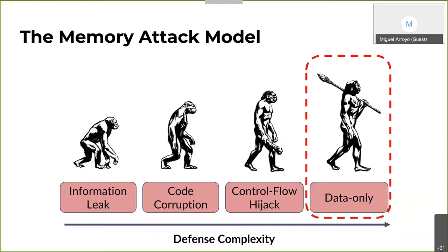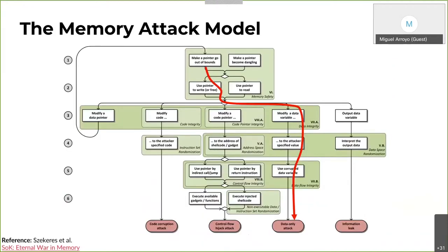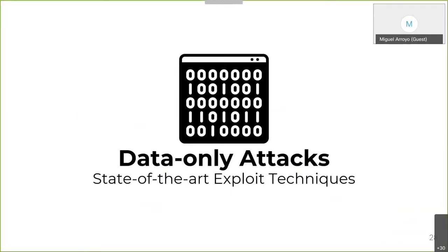Today, the state-of-the-art exploitation techniques fall into the data-only category. How do these work conceptually? Going back to the attack model: step one, we have some pointer that can cause you to go out of bounds — a spatial violation. This allows you to corrupt a data variable, violating the integrity of memory in steps three and four. The program then uses these corrupted data values resulting in chaos in step five. There are quite a few details to carry out these attacks, and this will be the focus of the rest of this talk.